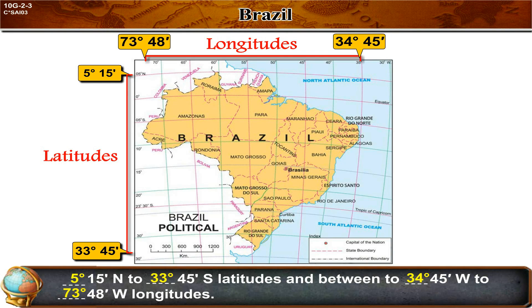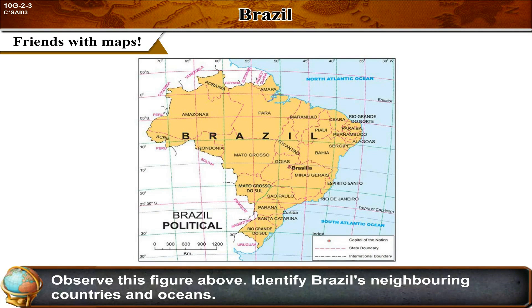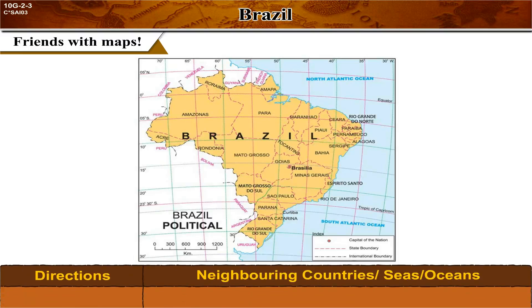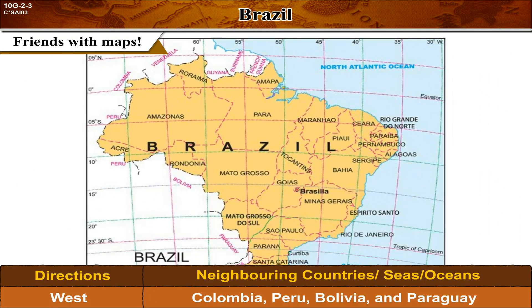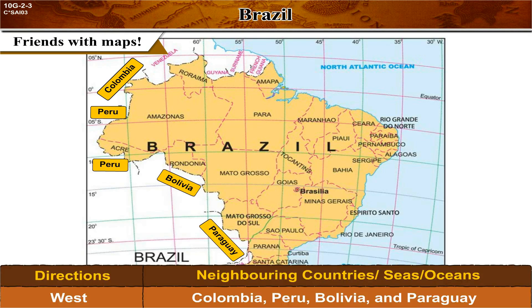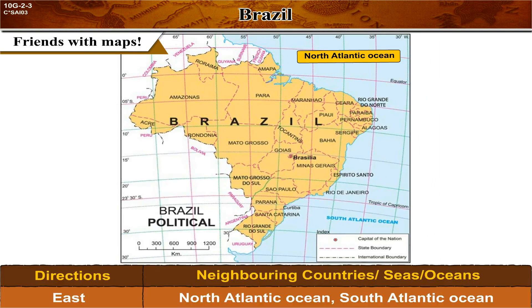Make friends with maps: observe the figure, identify Brazil's neighboring countries and oceans, and fill in the chart in your notebook. North: French Guiana, Suriname, Guyana, and Venezuela. West: Colombia, Peru, Bolivia, and Paraguay. South: Argentina. East: North Atlantic Ocean and South Atlantic Ocean.